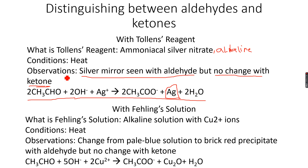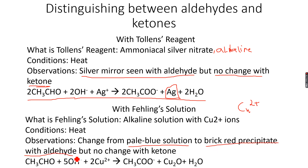Fehling's solution is a different test. Fehling's solution is an alkaline solution containing Cu2+ ions, and the condition is heat. You add the carbonyl compound to the Fehling's solution and heat it. The solution is initially pale blue and will turn to a brick red precipitate if there is an aldehyde. If the carbonyl compound is a ketone, again there is no change.